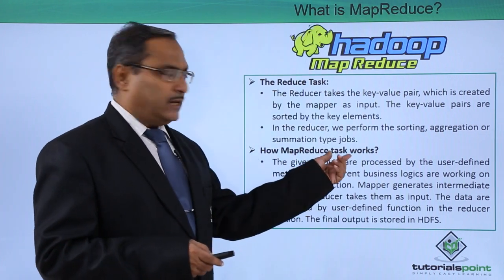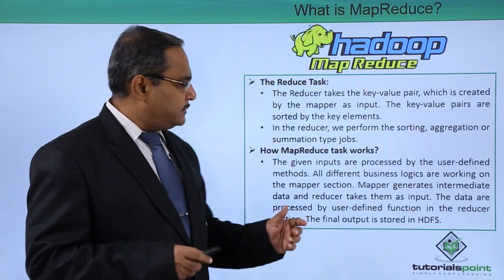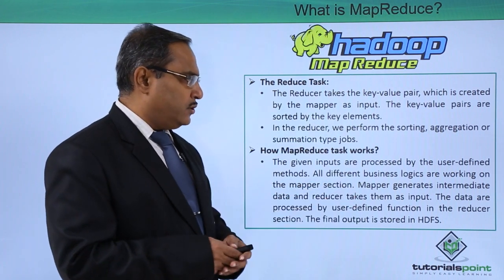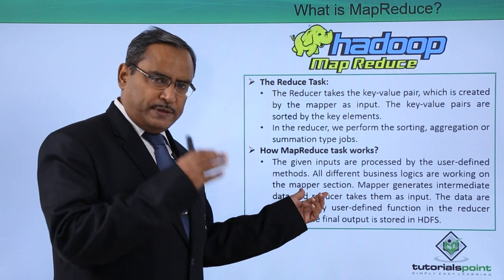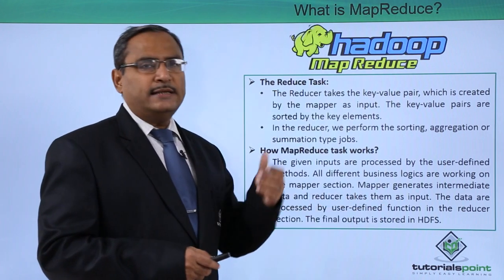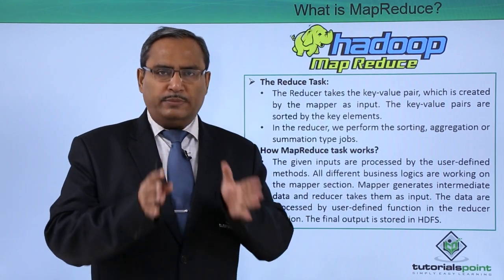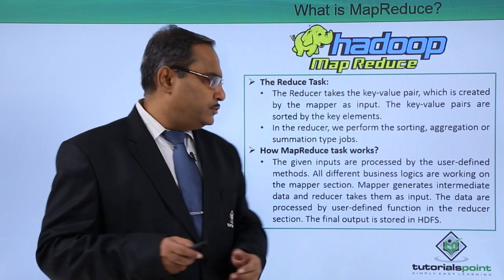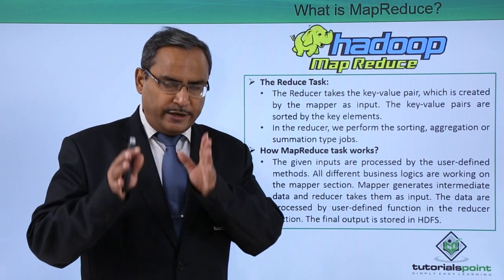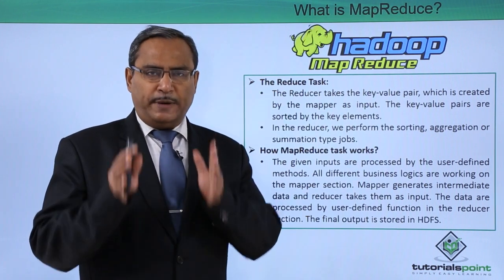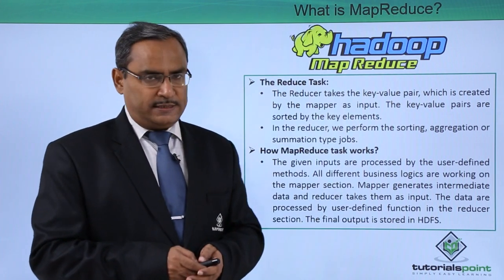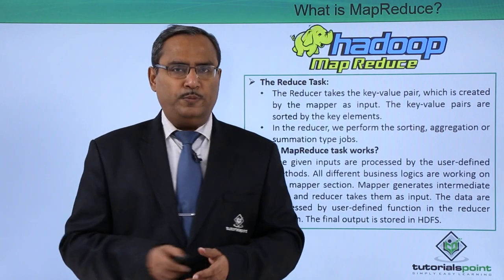How does MapReduce work? At a macro view, the given inputs are processed by user-defined methods. All different business logics work on the mapper section, and the mapper generates intermediate data which the reducer takes as input. Data is processed by the user-defined function in the reducer section, and the final output is stored in HDFS — the Hadoop Distributed File System.